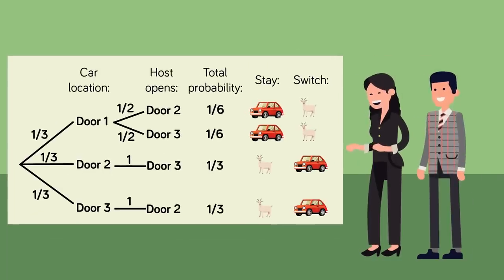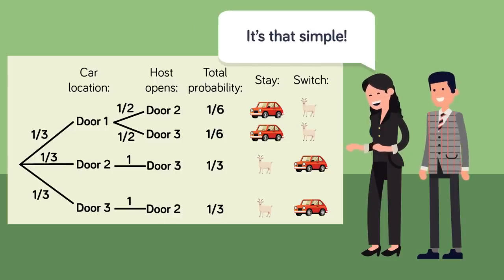Some additional explanation will further clarify her solution. Because there are three doors, each one of them has a one-third probability of having the car behind it. The opening of a door that reveals a goat does not cause the probability to be equally divided between the two remaining doors. As vos Savant puts it, the winning odds of one-third on the first choice cannot go up to one-half just because the host opens a losing door.